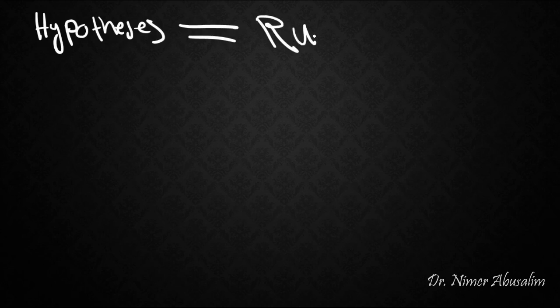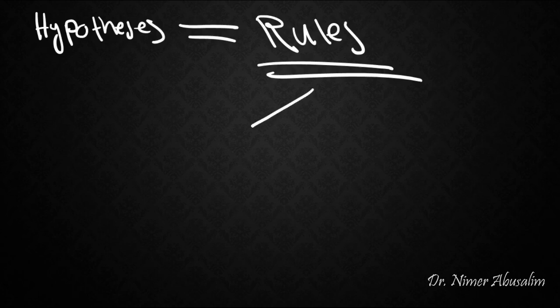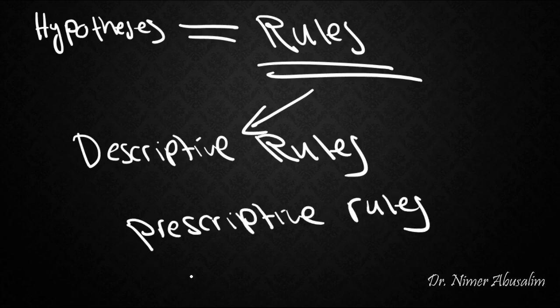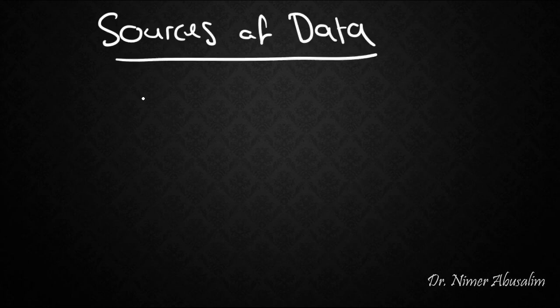But as you can see, we came up with hypotheses. These hypotheses are the rules of the language that we are looking for. And if you recall, we said that these are the descriptive rules. We are not interested in prescriptive rules. Only the descriptive rules. So far we've been talking about gathering data and observing and making generalizations from these data. But what are the sources of the data? Where do we get this from?